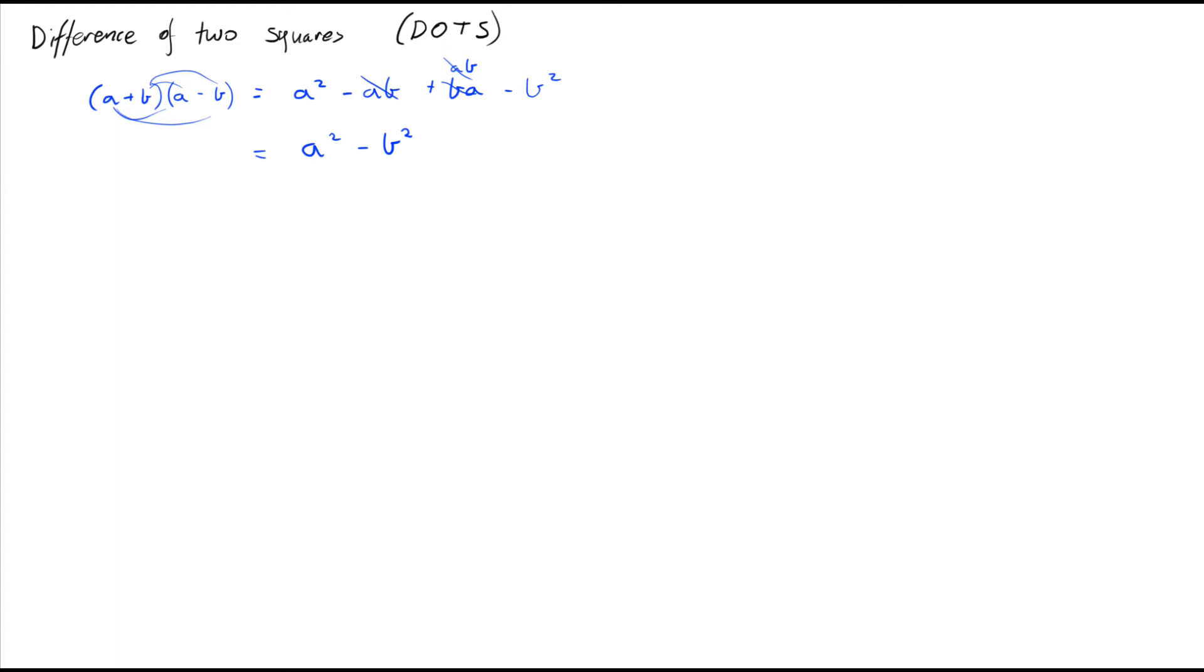So nice little formula again. For DOTS, (a + b)(a - b) = a² - b². So again, nice little formula that we use quite a bit.